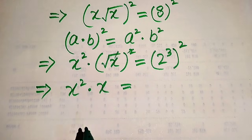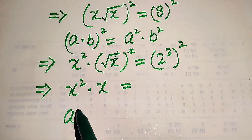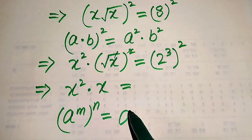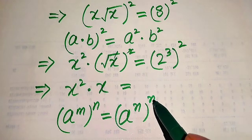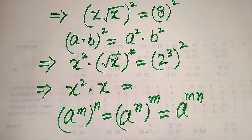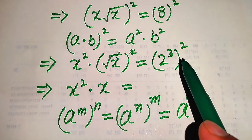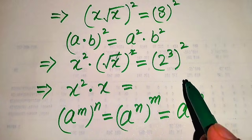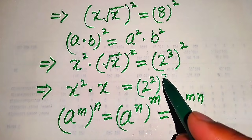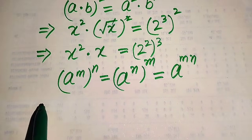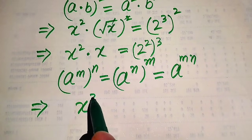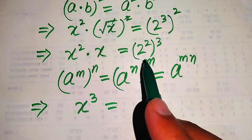On the right hand side we need to apply the exponential law: a to the power m to the power n equals a to the power m×n. So we interchange the exponents, and 2³ whole squared becomes 2² whole cubed. Further, x² × x equals x³, and 2² equals 4, so we have x³ = 4³.